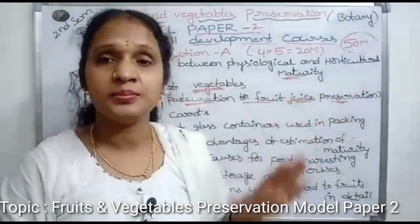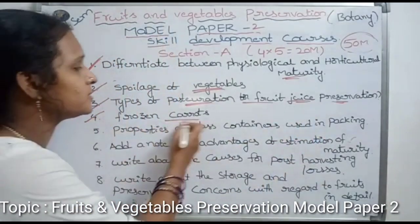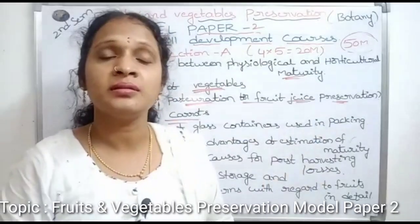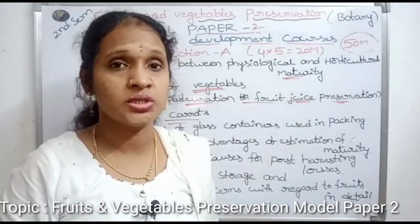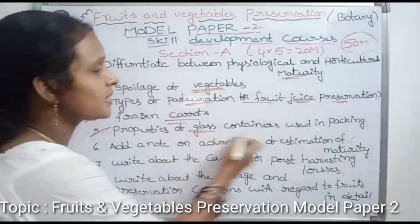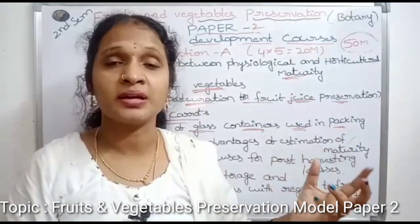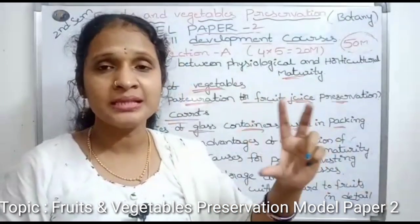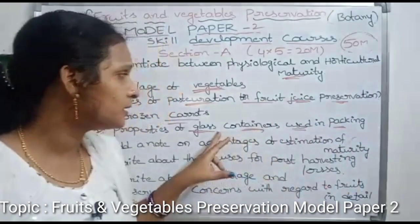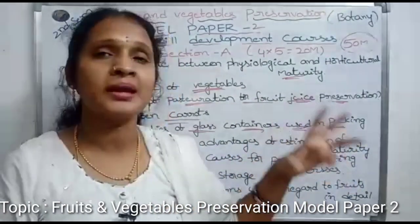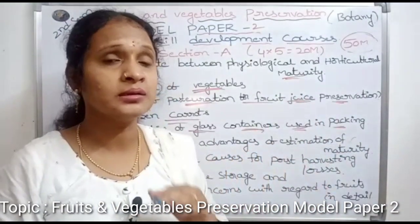Fourth question: frozen carrots — we need to store them at a low temperature. Fifth question: properties of glass containers used in packing. We need to consider how these containers are used in shops and how items are stored at low temperatures.